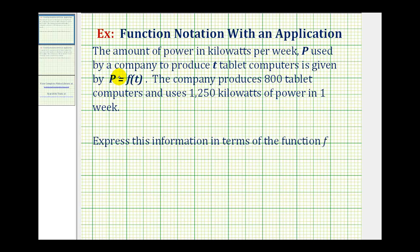Where P is the number of kilowatts per week and T is the number of tablet computers. The company produces 800 tablet computers and uses 1250 kilowatts of power in one week. We want to express this information in terms of the function F.